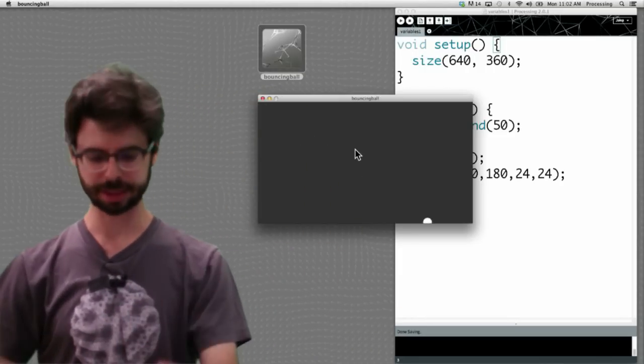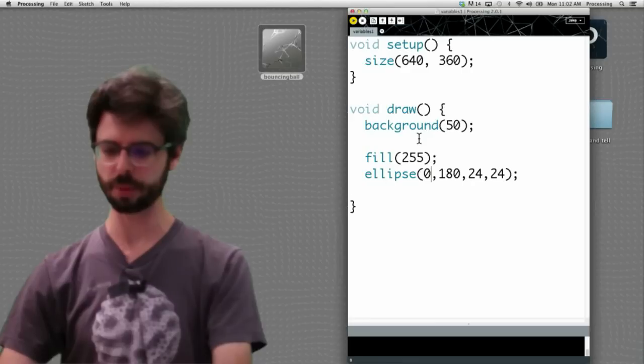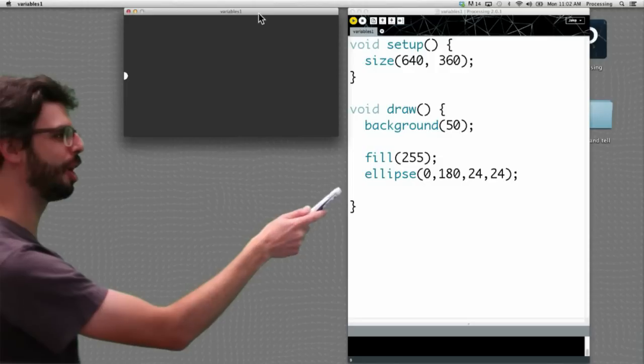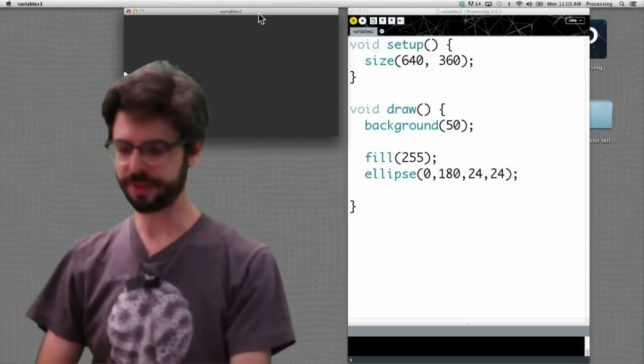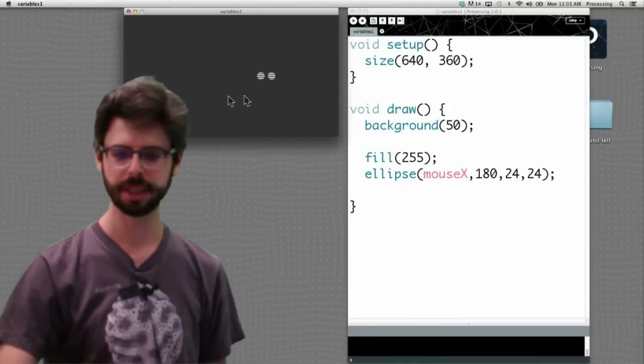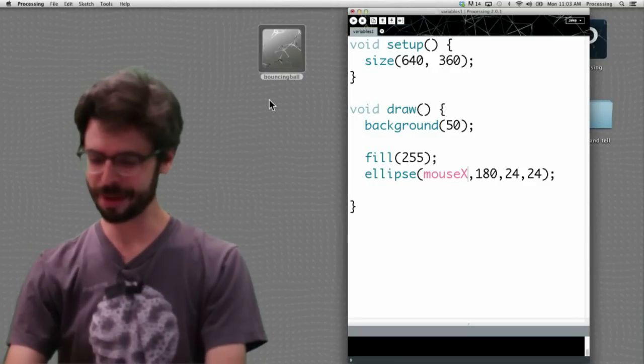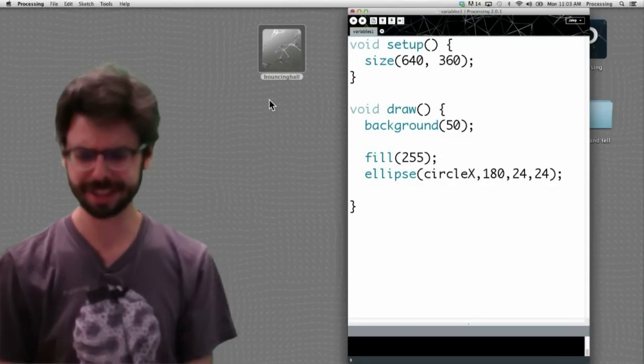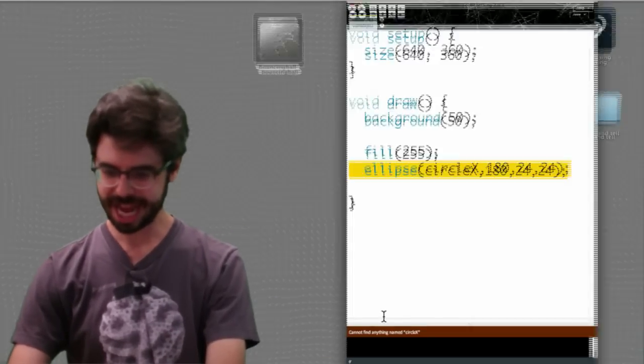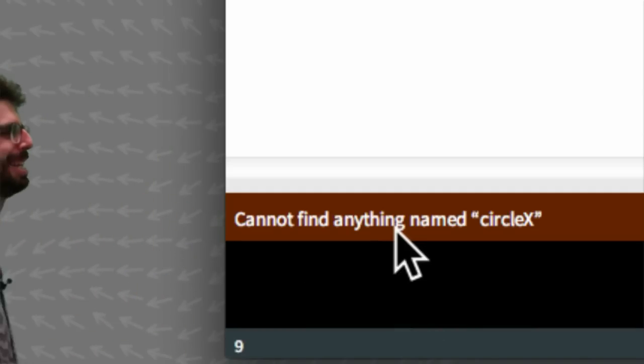But if I go into a processing sketch, and this isn't, this is not the code for that bouncing ball, but this is the code we're going to start with, we have this sketch that all it does is draw a circle at 0, 180 over and over again. What if I go and type in mouse x? This is where we've been. No problem. Now it's where the mouse is. If I go and type in circle x, first of all, it doesn't turn pink. Processing has no idea what circle x is. And if I run it, it says at the bottom, can't find anything, cannot find anything named circle x.